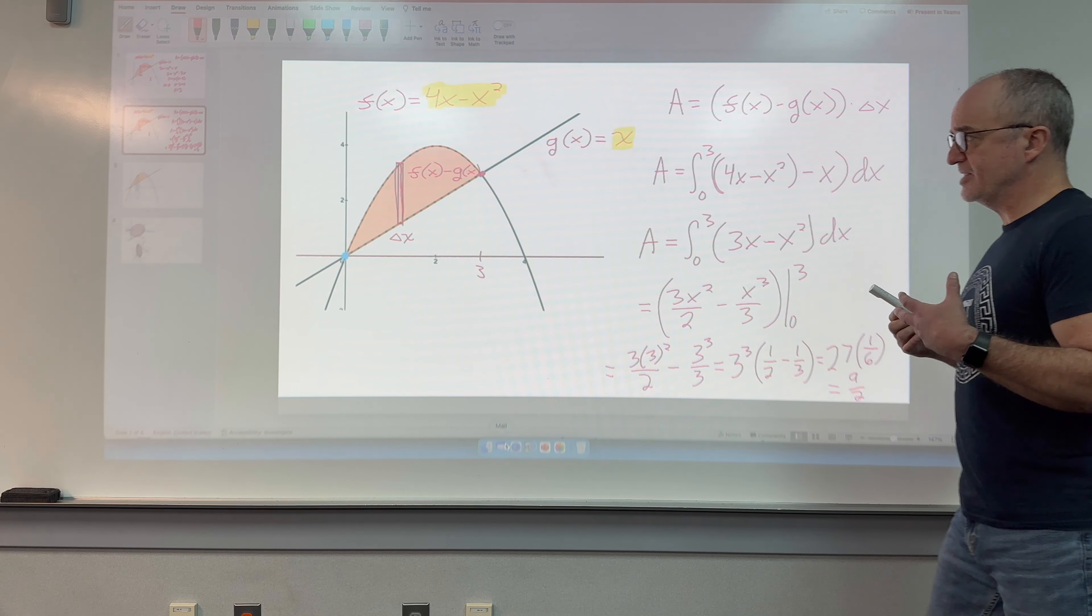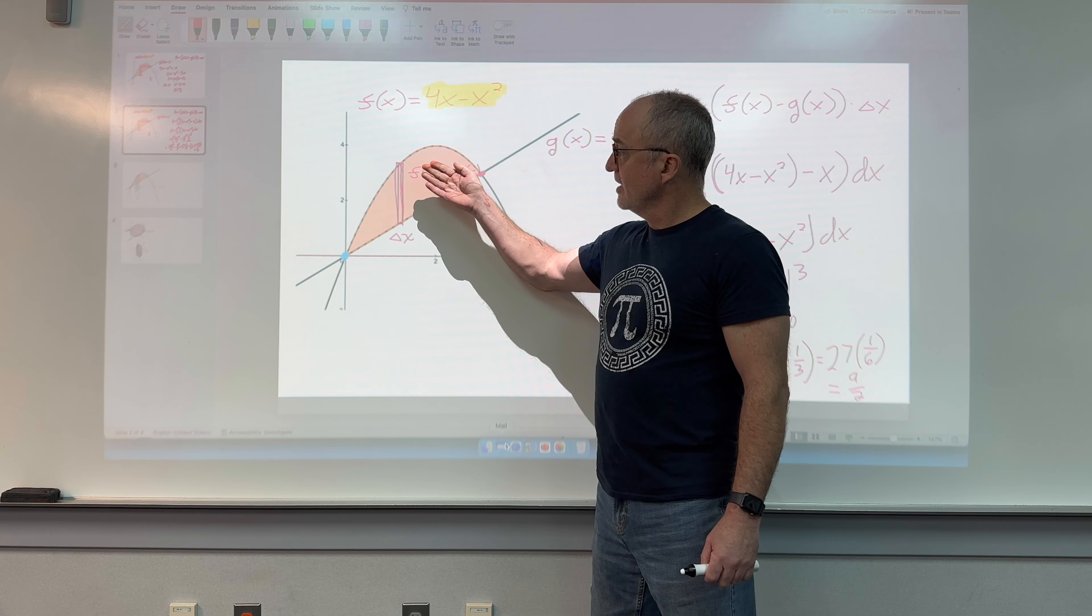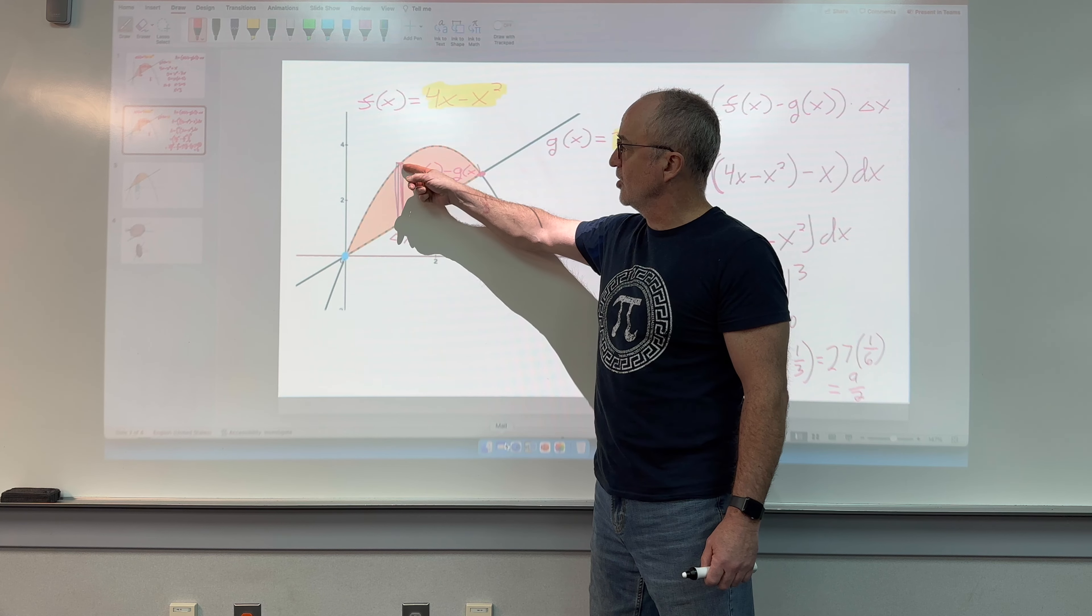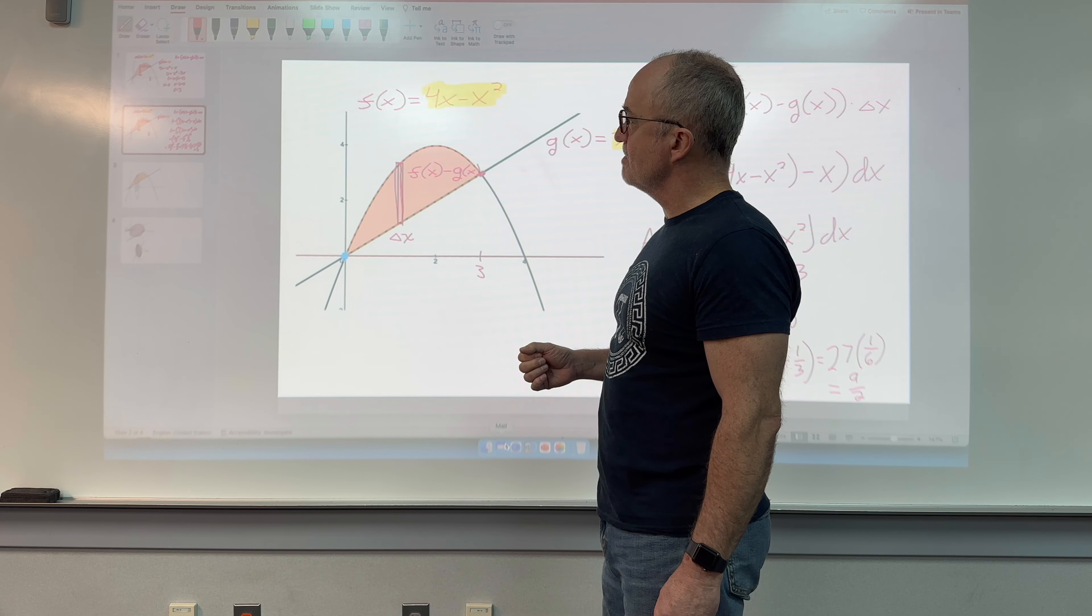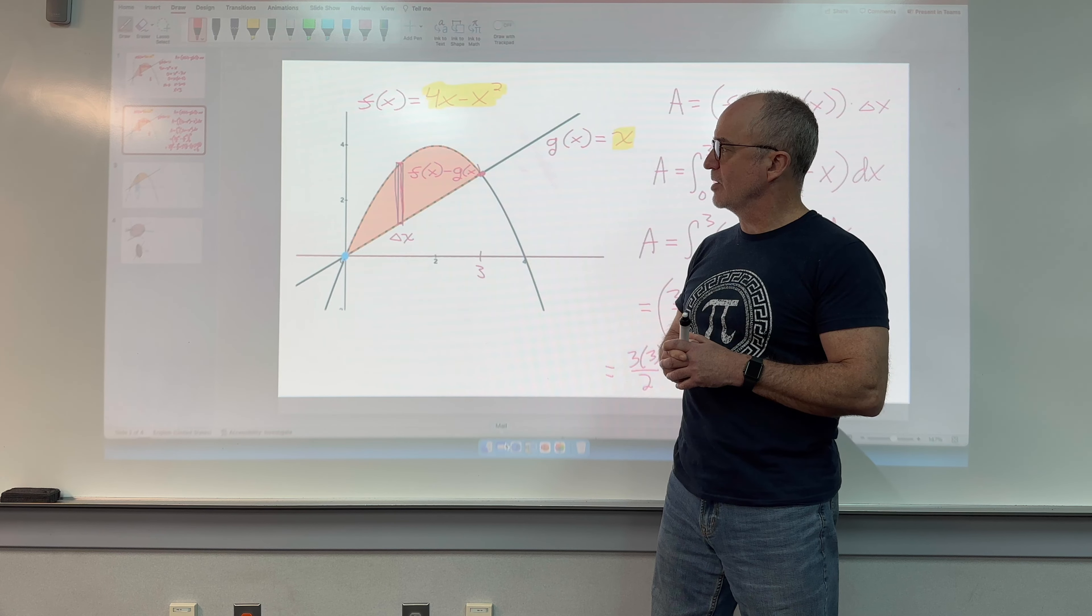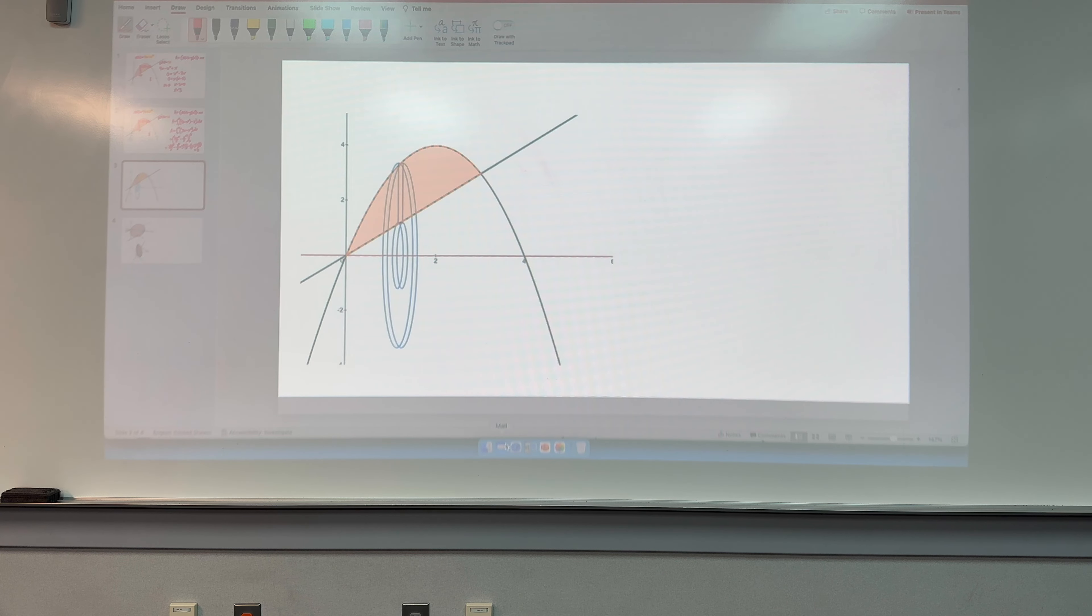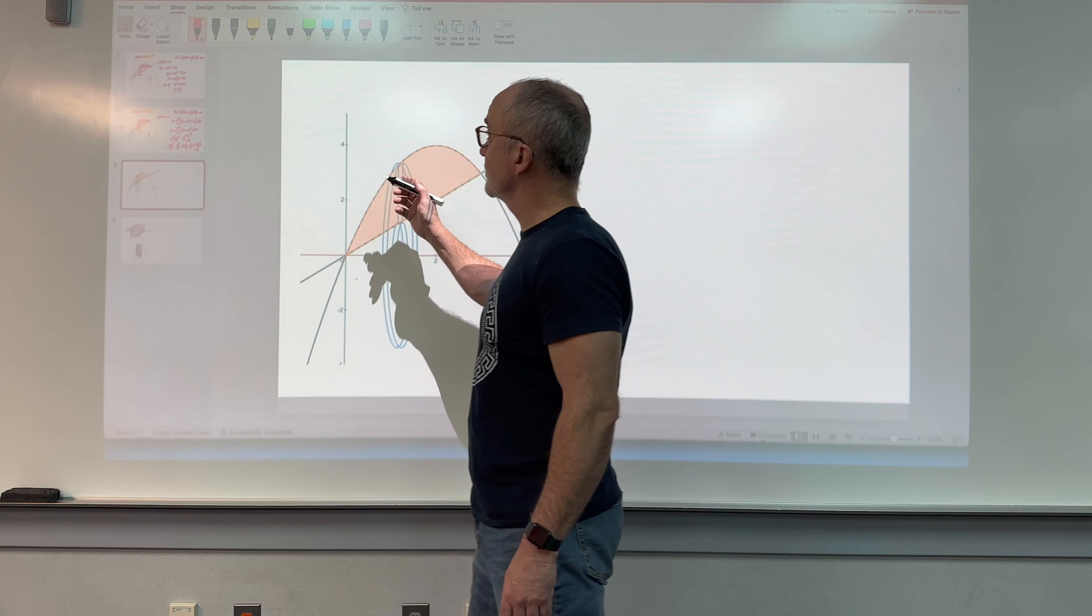But that's how I find the area bound between 4x minus x squared and y equals x. Now though, let's say we want to find a volume. Last time we used something called the disk method to find the volume of an area that we spun around the x-axis. I want to find the volume you get when you spin this Riemann rectangle around the x-axis again. I'm going to spin it around the x-axis. Take a quick break here because I have to change something in one of my later slides.